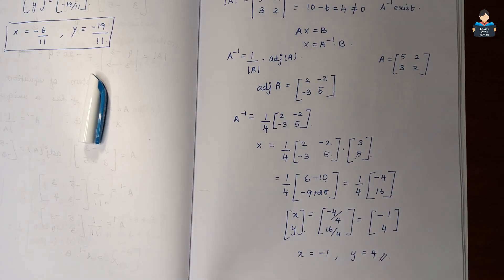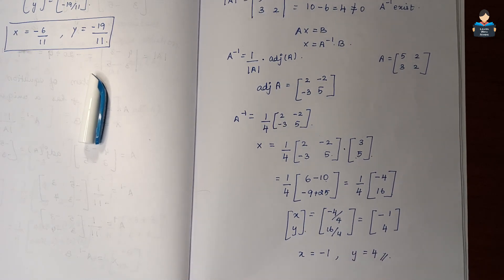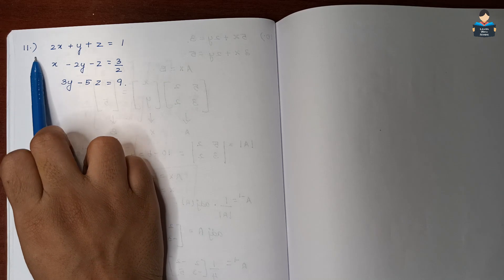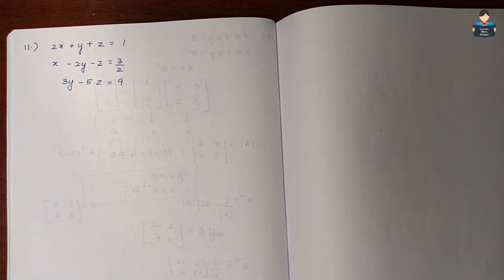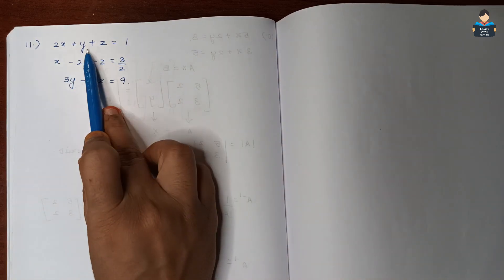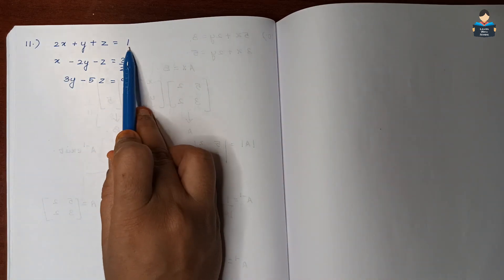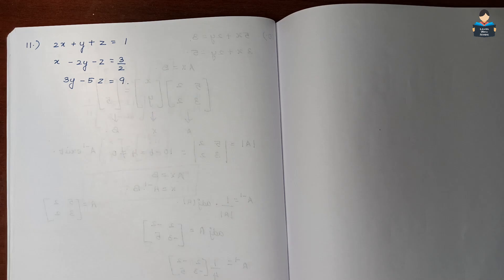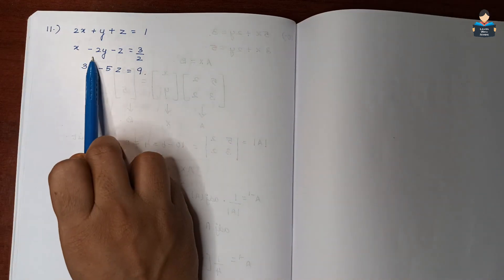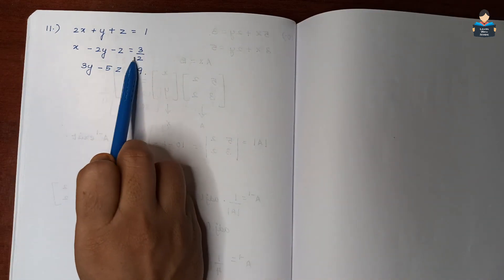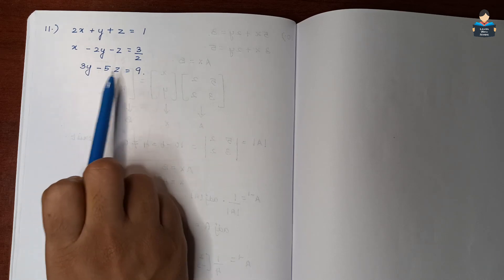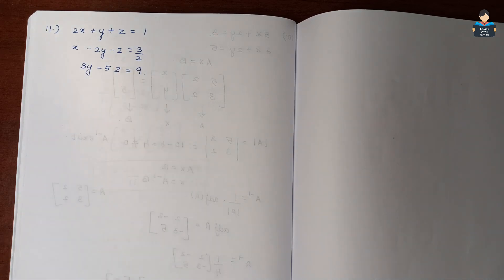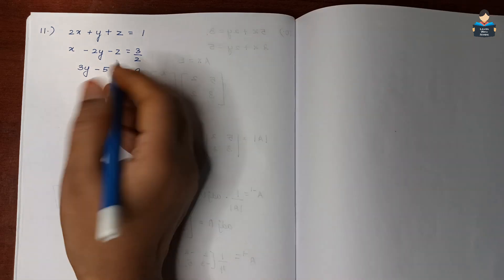Now for Question 11, we solve the following system of equations using the matrix method: 2x + y + z = 1, x minus 2y minus z = 3/2, and 3y minus 5z = 9.